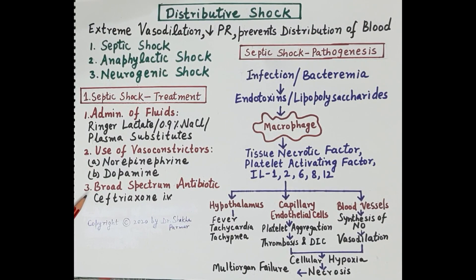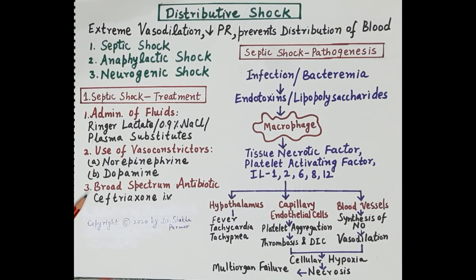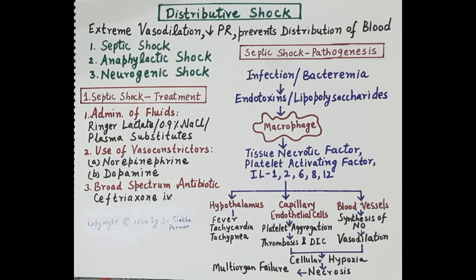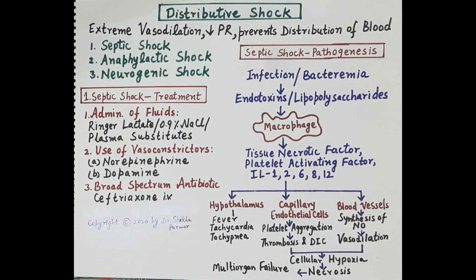The third and most important strategy is to administer antibiotics. The source of infection — the bacteria — should be cultured to identify the exact type. Until culture results are available, empirical therapy should be provided using broad-spectrum antibiotics like ceftriaxone. These are the treatment steps to manage septic shock.